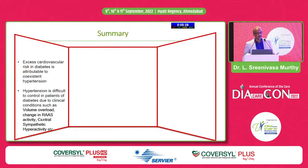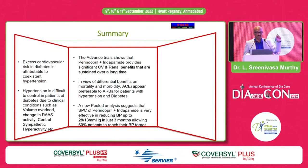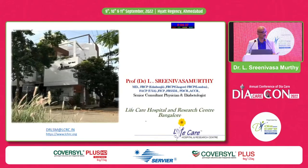In summary: excess cardiovascular risk in diabetes is attributable to co-existent hypertension. Hypertension is difficult to control in diabetics due to volume overload, changes in RAS activity, and central sympathetic activity. The ADVANCE trial clearly showed perindopril-indapamide provides significant CV and renal benefits sustained over the long term. ACE inhibitors appear preferable over ARBs. A new pooled analysis confirms the SPC of perindopril-indapamide is effective for BP reduction as early as two months. The triple drug combination with amlodipine provides strong BP reduction, and total mortality reduction of about 28%.